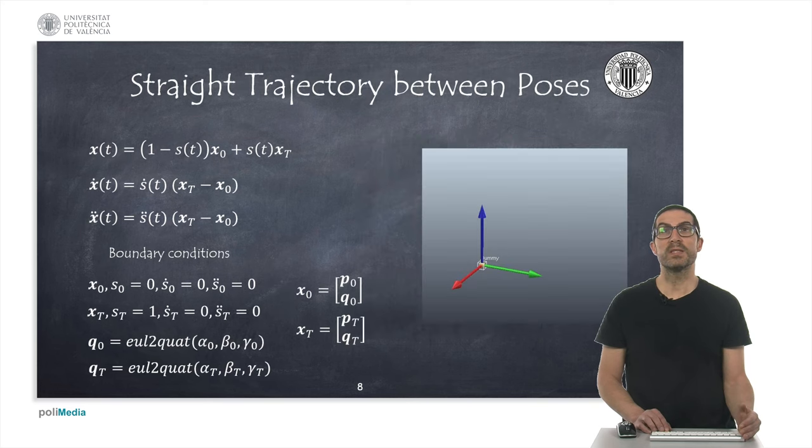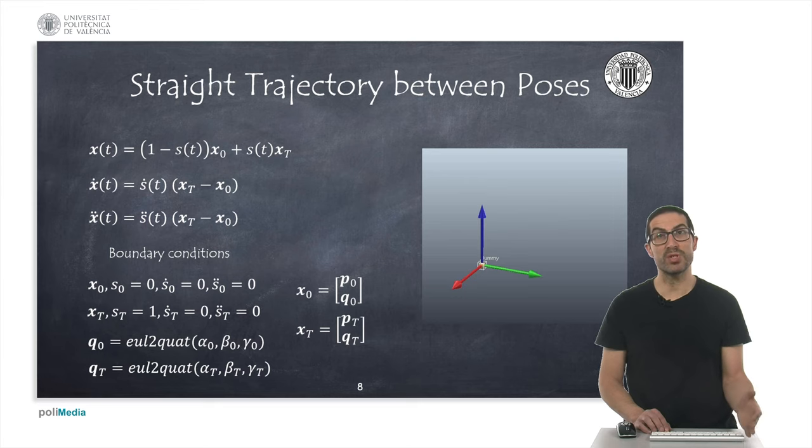We can combine these two ideas to generate a pose generator. The idea is that now we can perform a linear interpolation between two poses defined by their position coordinates and also their orientation coordinates with orientation expressed in quaternions. As before,